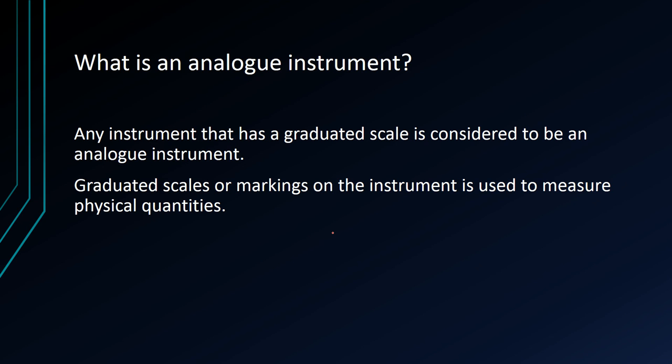So what is an analog instrument? An analog instrument is anything that has a graduated scale on the device itself. So say for instance an old wristwatch, a clock, a ruler that's in your bags or measuring tape, anything that has graduations or markings that list values on the instrument itself is an analog instrument.